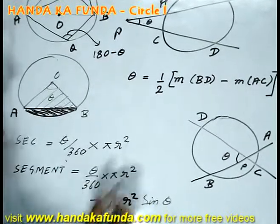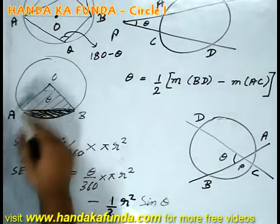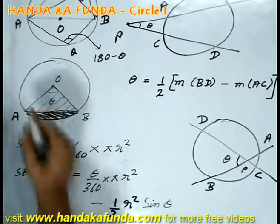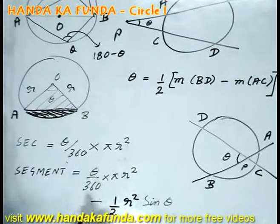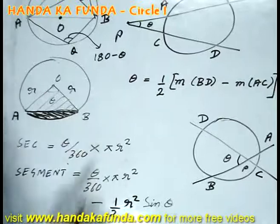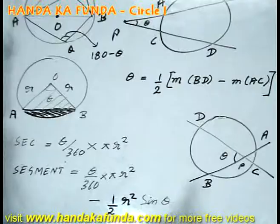Area for that is given by area of the sector which we already know theta by 360 into pi R square minus the area of the triangle OAB. How do I get that? Both the radii are R, the angle is theta. For a triangle, if I know two sides A and B and the angle theta, the area is given by half AB sin theta. So, this becomes half R square sin theta.